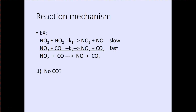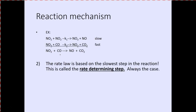There's no CO in the slow step, so it must be zero order. The rate law is based on the slowest step in the reaction — that is known as the rate-determining step, and that is always the case. The reaction mechanism can be broken down into elementary steps, and the stoichiometry of the elementary step that matches the experimentally determined rate law should be the slowest step.